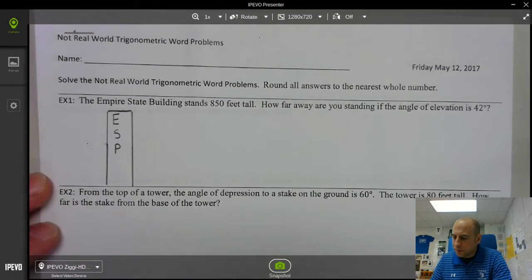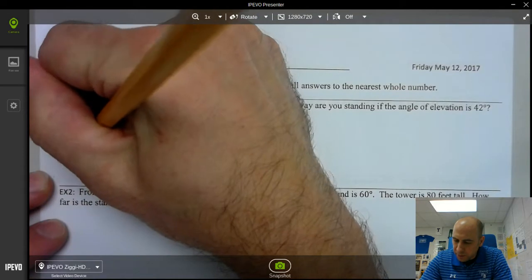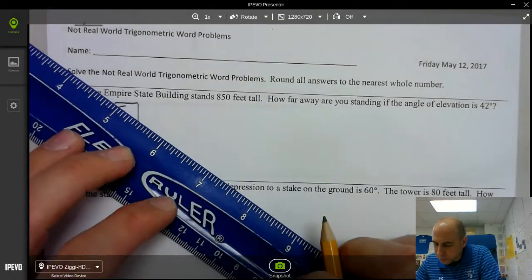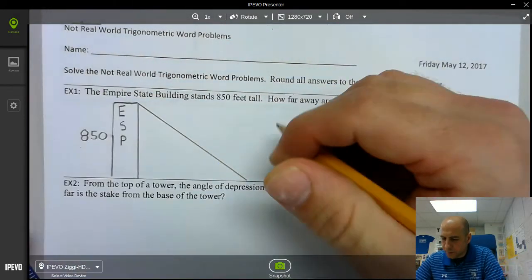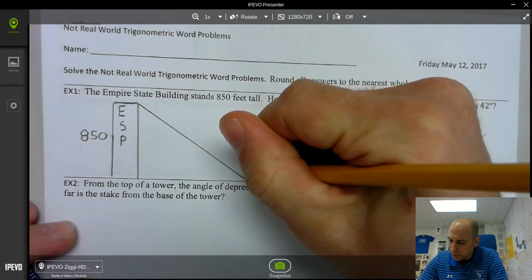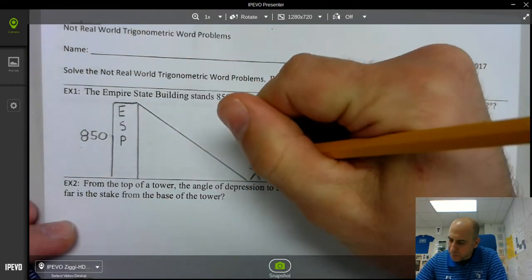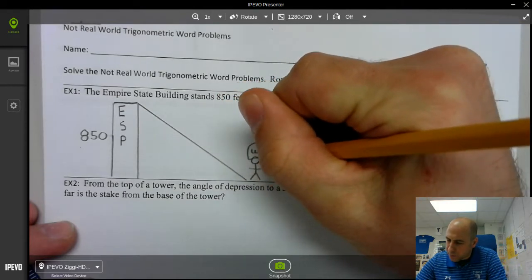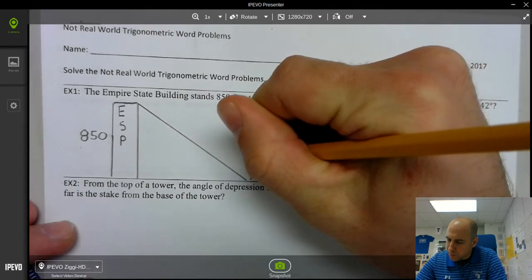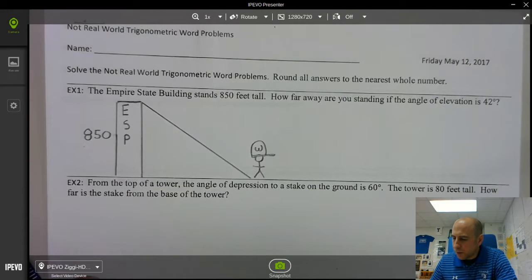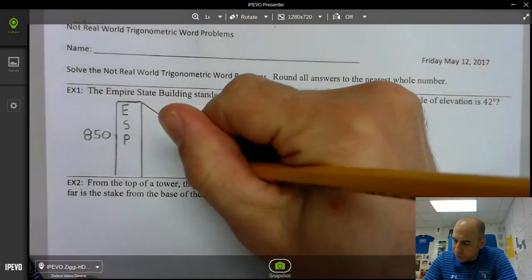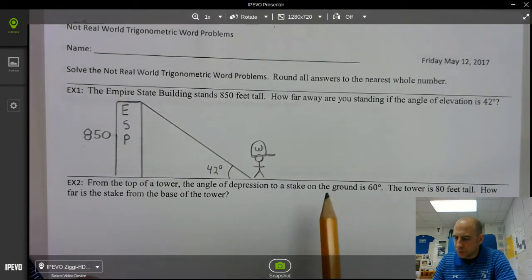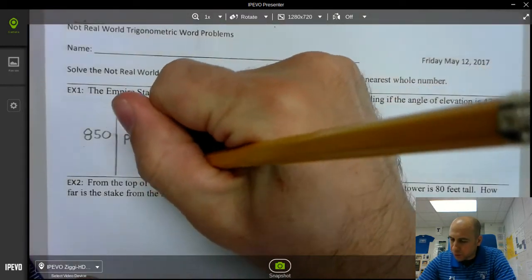Okay let's see there's your Empire State building it's 850 feet tall and you are standing right here with your Temple Wildcats hat. Alright and the angle of elevation is 42 degrees. Okay and so you want how far away so there's x.